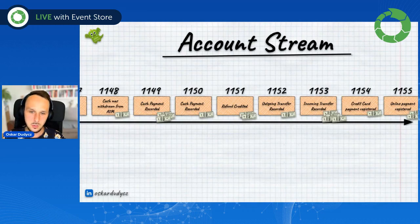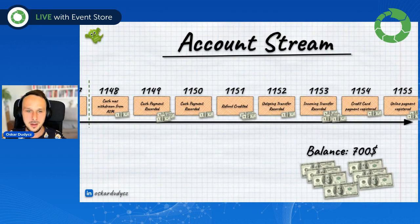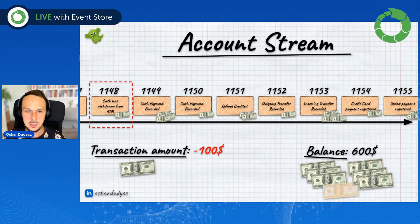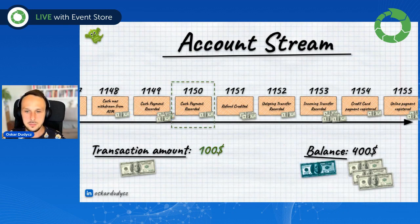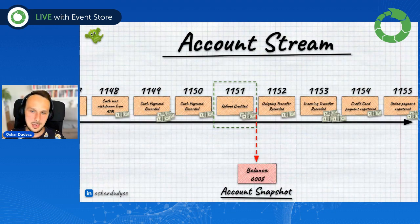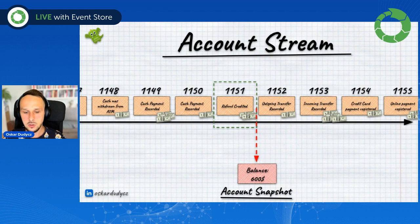What is snapshot? Here you are seeing about 5% of my banking account. Typically, if we would be reading all of those events one after another, we will be increasing or decreasing our balance. So then if we have snapshots, at some point in time we would say that at this point in time I'm storing the current state of my write model.